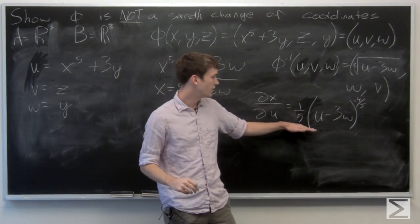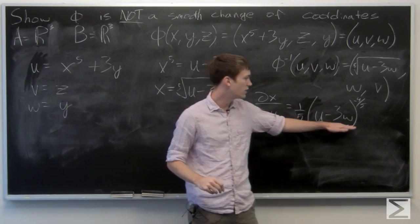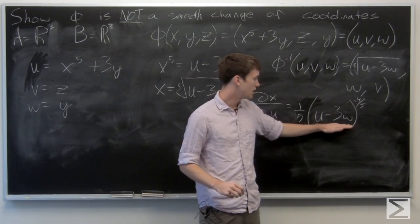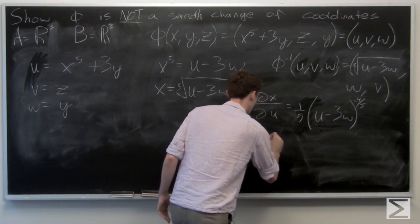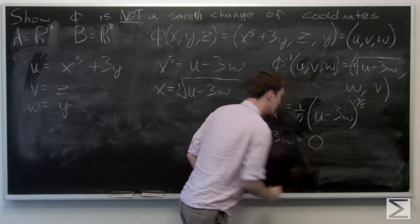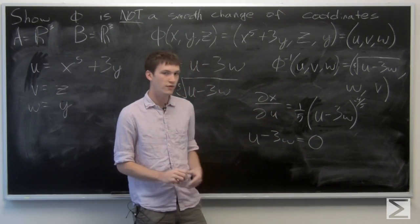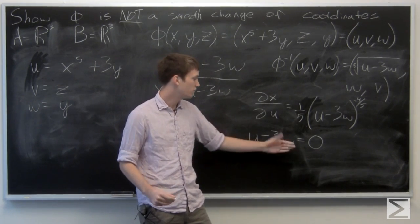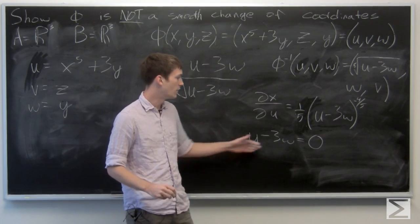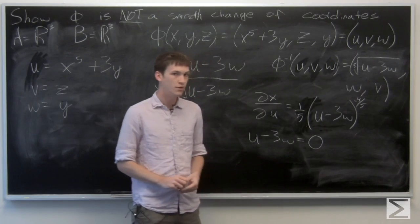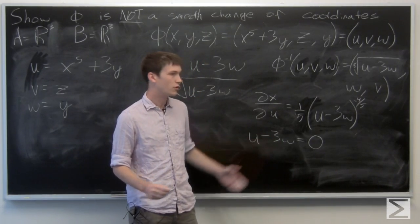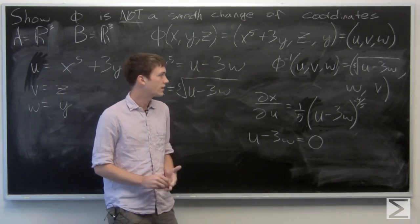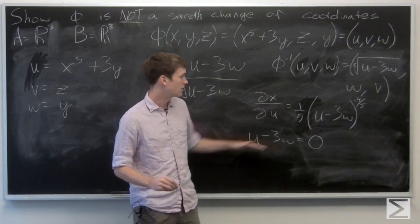Our partial derivative is one-fifth times u minus 3w to the negative four-fifths. If this quantity is equal to zero, if u minus 3w is equal to zero, then the derivative doesn't exist. So we know that we can find some point, let's say u equal to 3 and w equal to 1. We see that the partial derivative doesn't exist there. So any point on this plane will produce a point that is not differentiable, so we know that phi is not a smooth change of coordinates.